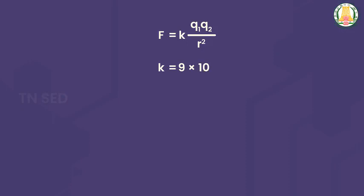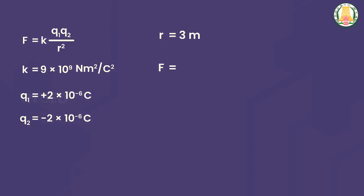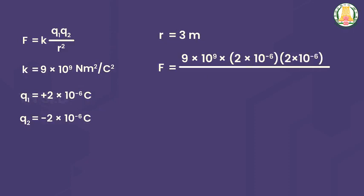We know the charge values and the distance R. Substituting into Coulomb's law: K = 9 × 10⁹ N·m²/C², Q1 = 2 × 10⁻⁶ C, Q2 = −2 × 10⁻⁶ C, R = 3 m. So F = (9 × 10⁹ × 2 × 10⁻⁶ × 2 × 10⁻⁶) / (3²) = 4 × 10⁻³ N.